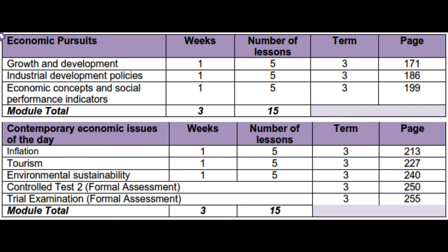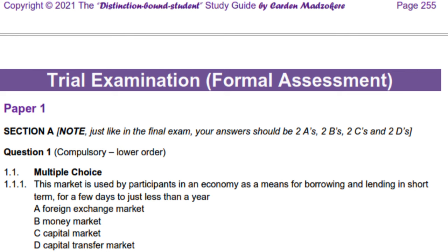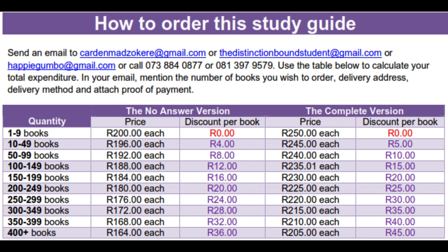After the 30th lesson of the term, you will be ready for the trial exams in September and the final exam in November. Here at TDBS we believe that our textbooks give you enough information to get a distinction. Complete versions with answers cost 250 rands and no-answers versions go for 200 rands. You can order at distinctionboundstudent@gmail.com or cardenm adzokere@gmail.com, or call us on 073-884-0877.